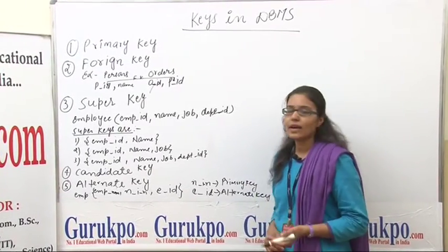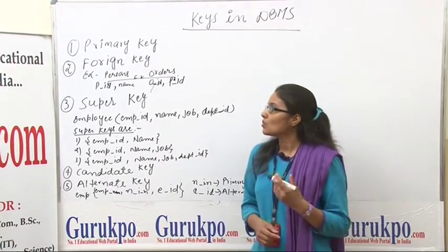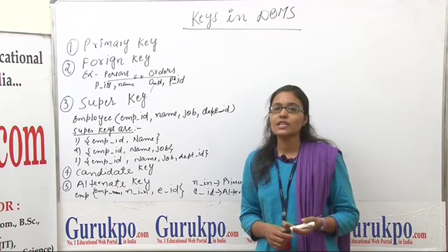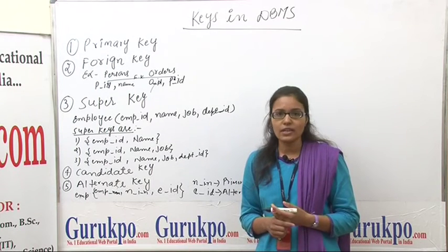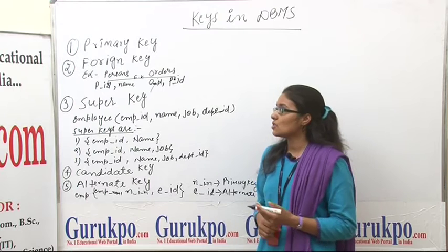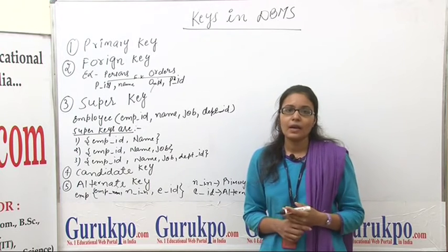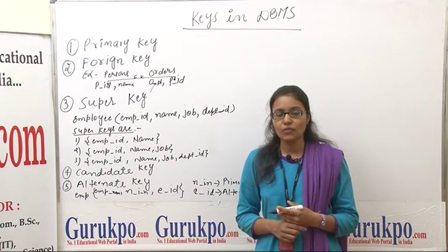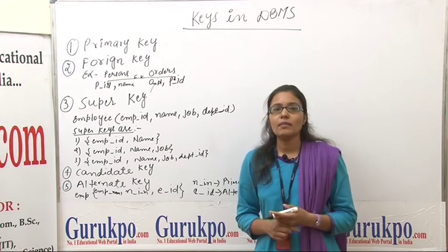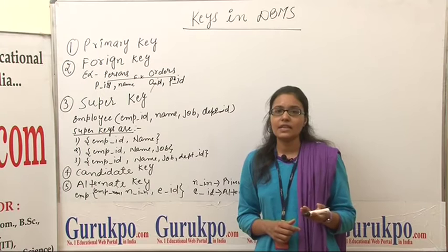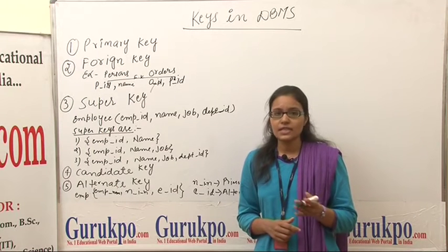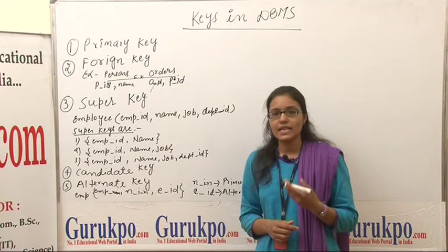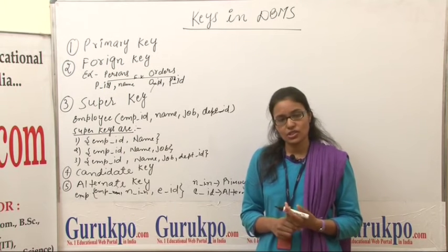Now we will discuss one by one. First, let us know what is a key — a key is a value that uniquely identifies each record in a table. A primary key is a value that uniquely identifies each record in a table. For example, roll number is treated as primary key in the student database. Two students' names can be the same, so we use roll number as primary key to uniquely identify each student.